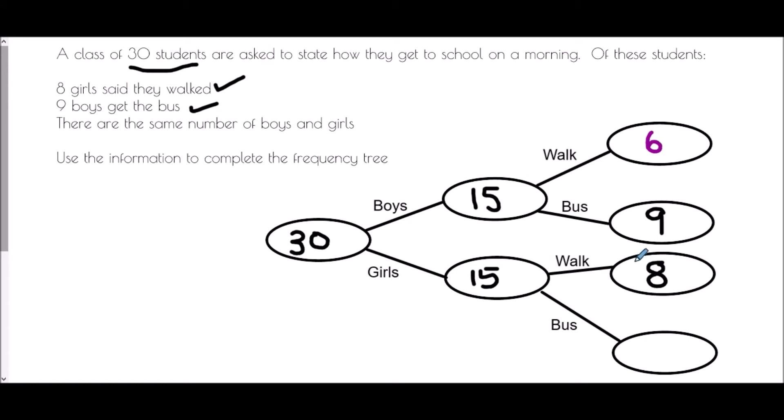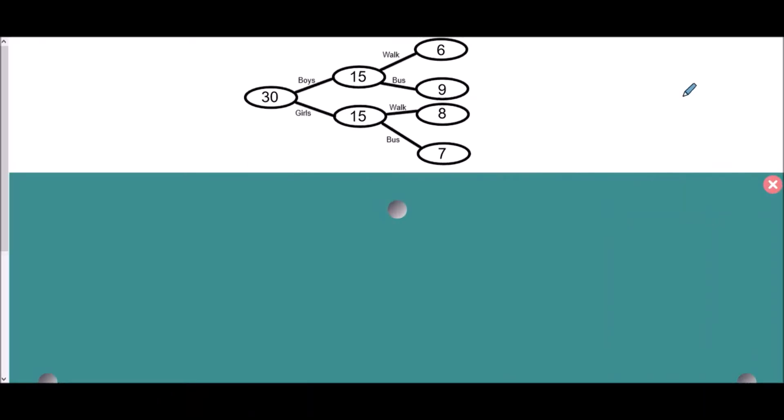Same situation with the girls here. We know there are 15 girls in total. Eight of them walk and therefore the rest get the bus. And so we've completed what we've been asked. Now, frequency trees are used generally in order to find some probabilities.